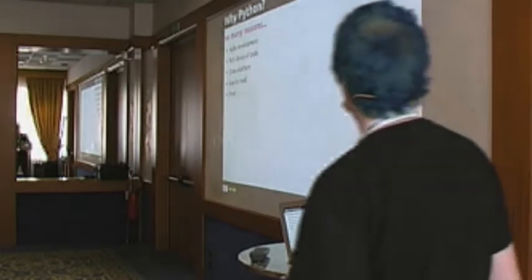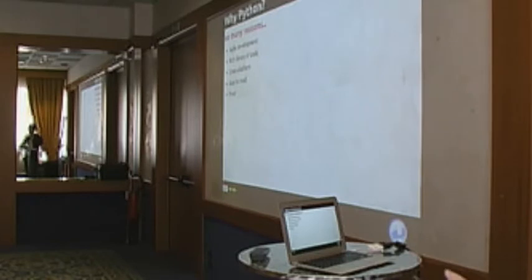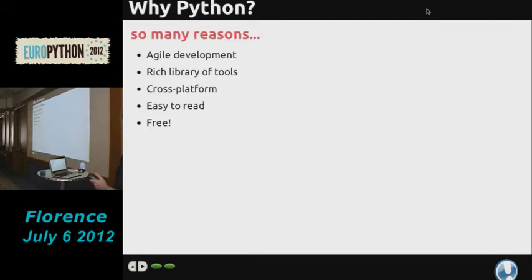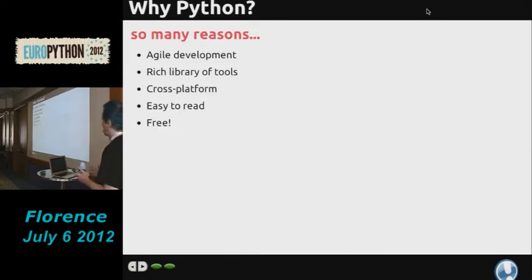Why do we use Python? Many reasons. One of the main reasons is our development philosophy is agile development — that's how we get stuff done. It's convenient when you're developing small user stories, small features one at a time. You want a quick turnaround: get the code written, get the code tested quickly, get it reviewed. Python suits that development model quite well. It has a rich library of tools in the standard library and outside it.